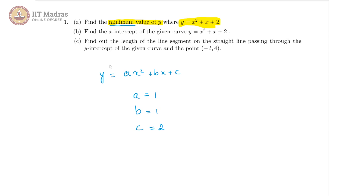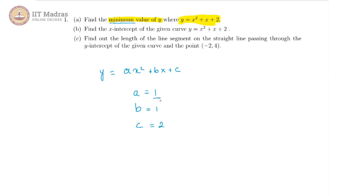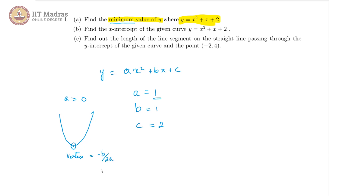We are looking at the minimum value. Because the x squared coefficient a is 1, that is a is greater than 0, our parabola will be in an upward form. If a were less than 0, it would be inverted — a downturned parabola. The minimum value is going to occur at the vertex, which we know to be minus b by 2a.